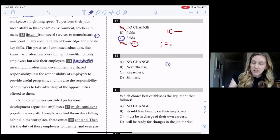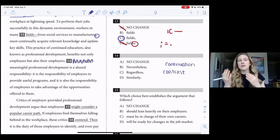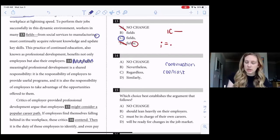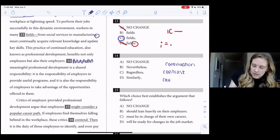This could either be continuation, which is the first category of transition word, or it could be contrast, so opposing ideas, or it could be an even more special type of continuation, which we call cause and effect.